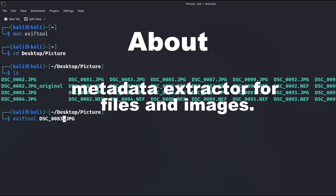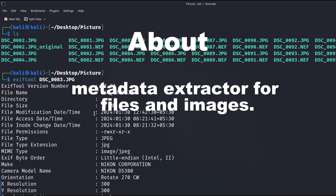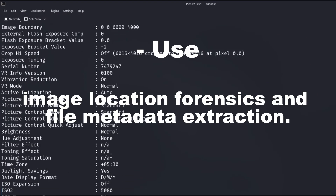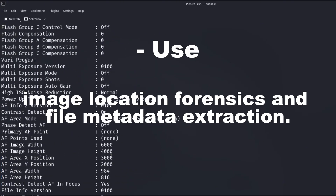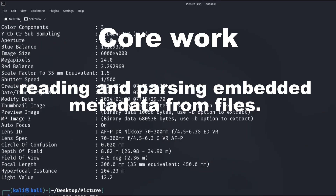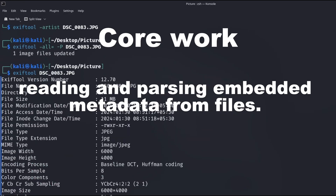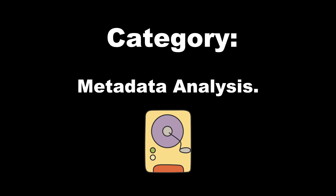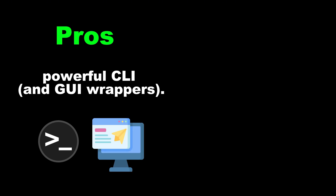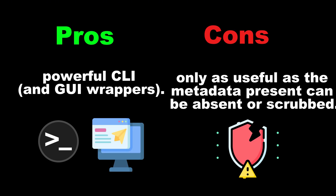Tool 10: ExifTool — a metadata extractor for files and images. About: image location forensics and file metadata extraction. Core work: reading and parsing embedded metadata from files. Category: metadata analysis. Pros: powerful CLI and GUI wrappers. Cons: only as useful as the metadata present — can be absent or scrubbed.